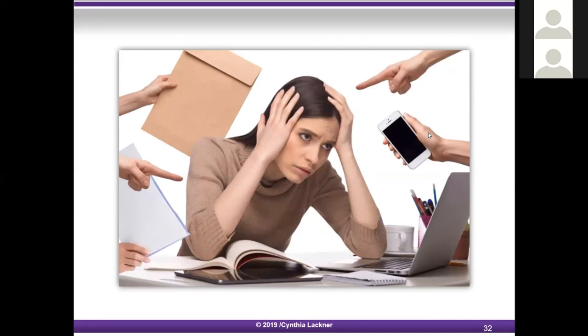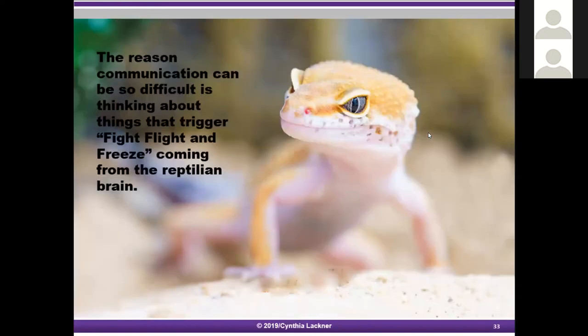Part two examines the question: how does one improve communications with others? We need to protect ourselves from emotional attacks — when someone verbally attacks us, circuits in our brain get downloaded with a lot of emotional memory. Sometimes it feels like someone standing with cleats on our heart. What can activate stress the most is when we feel judged. Communication can be so difficult because things trigger fight, flight, and freeze coming from the reptilian brain. When we are in a brain state five — overwhelmed, scared, angry, or sad — hearing messages can often trigger us.